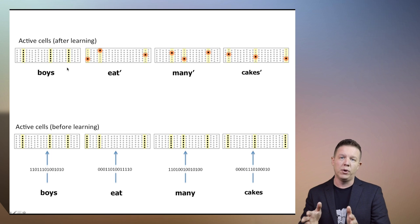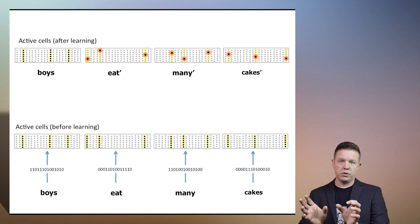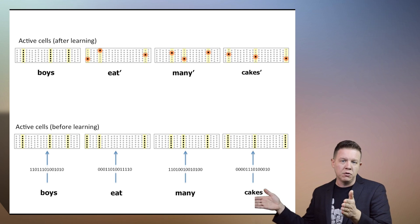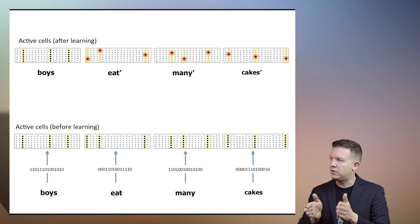So after learning, once we get the term 'boys' — a spatial pattern for boys, which kicks off the sequence — all the columns burst because there is no context for boys. It's always the first word in the sentence.